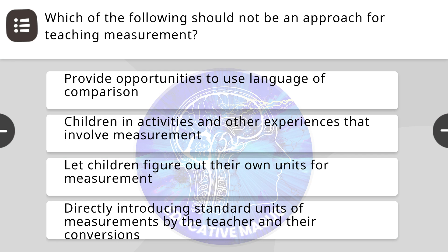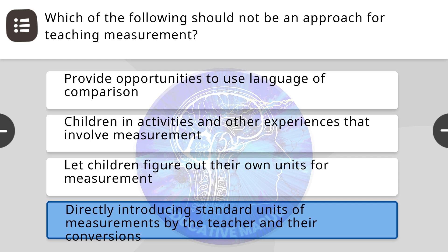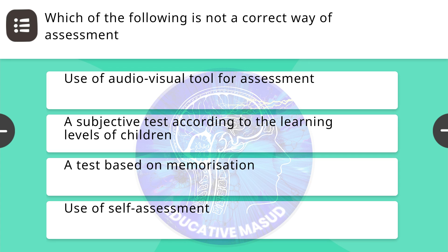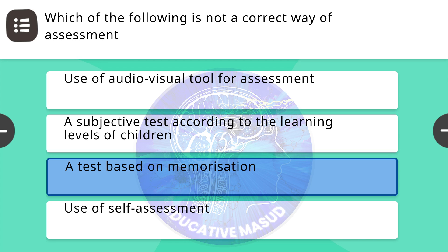Next question: which of the following should not be an approach for teaching measurement? Correct answer is directly introducing standard units of measurements by the teacher and their conversion. Next question: which of the following is not a correct way of assessment? Correct answer is a test based on memorization.